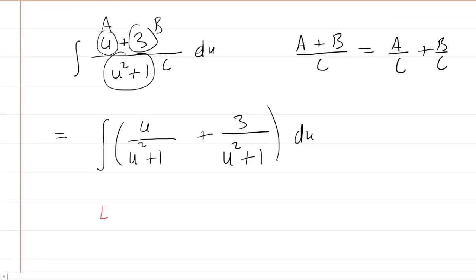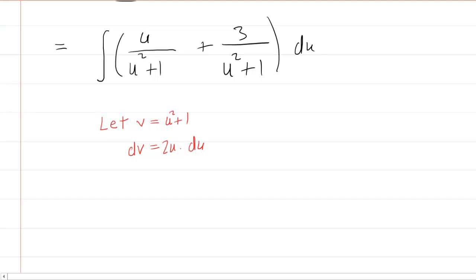So what we'll do is for the first one, a basic, well, I almost said u substitution, but we've already used u. So let's do v. Let's let v equal the denominator u squared plus one. If we differentiate both sides, we'll have dv is equal to 2u du. Let's solve for du. So divide both sides by 2u and then you'll have dv over 2u is equal to du.